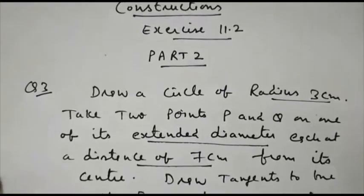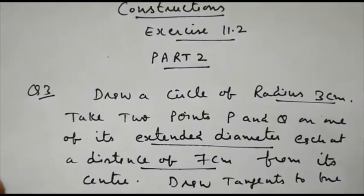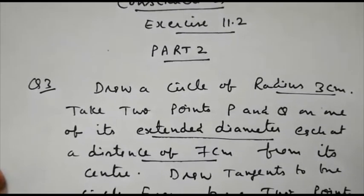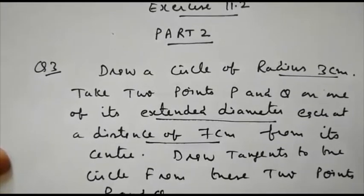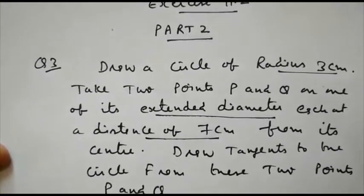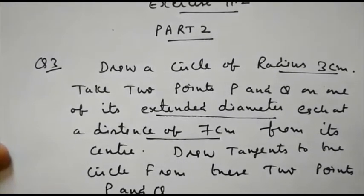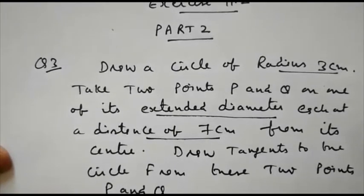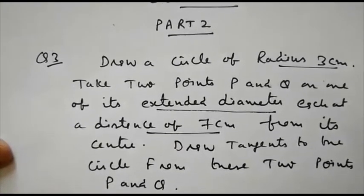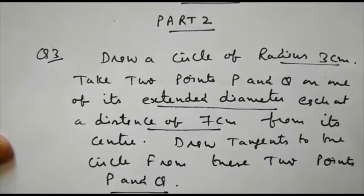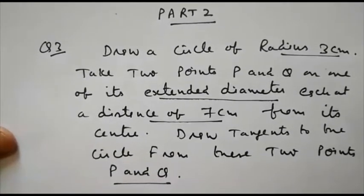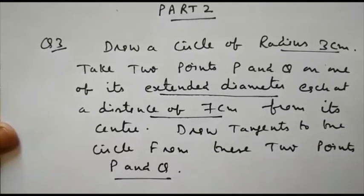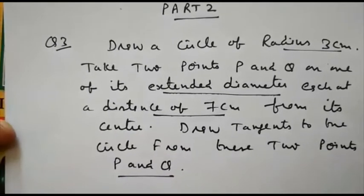So in question number 1 and 2, we have drawn the tangents. Now question 3, draw a circle of radius 3 cm, take two points P and Q on one of its extended diameter, each at a distance of 7 cm from its center and draw tangents to the circle from these two points P and Q.